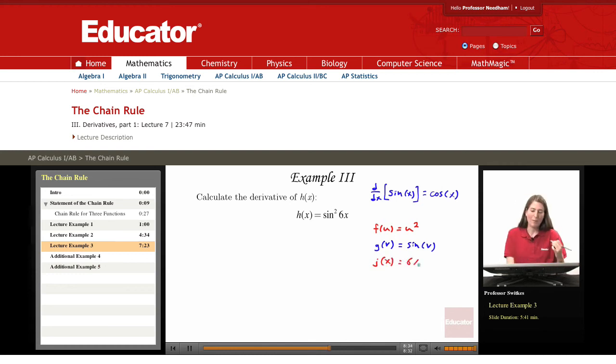Now it might look strange that the outer function here is u². If that looks strange, I want to point out that sin²(6x) could be rewritten as [sin(6x)]².